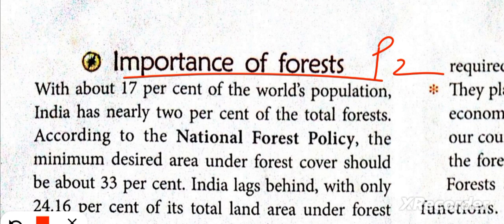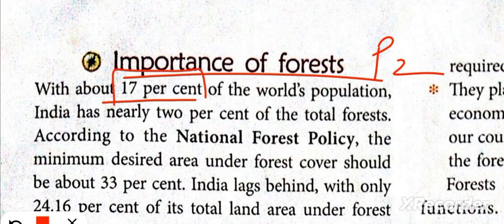If we talk about how much of the world's population lives in India, it is 17%. We are the most populated country in the world today — India has the largest population. So we hold 17% of the world's population, but our forest cover is only 2% of the world's total forest cover. This is a very big mismatch: population is 17% but forest cover is only 2%.